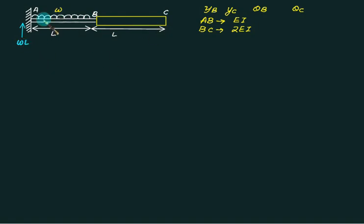So this is WL. So what is this moment? This moment is W into L multiplied by L by 2, and that is anticlockwise. So this one is WL square by 2. SFD will be WL upward, then goes to 0, and then there is no WL. Shear force is 0 here.